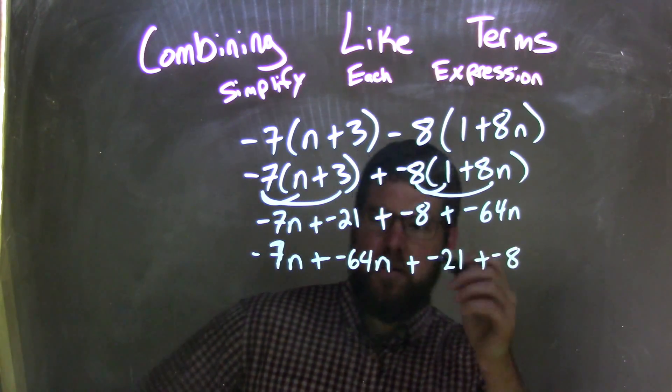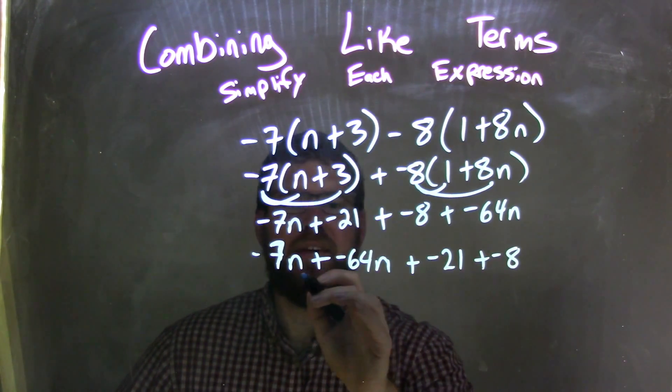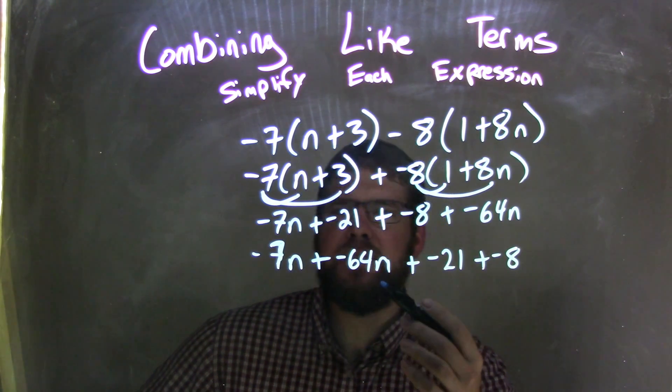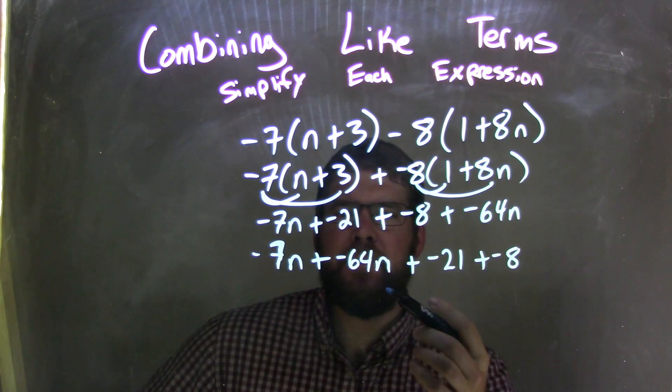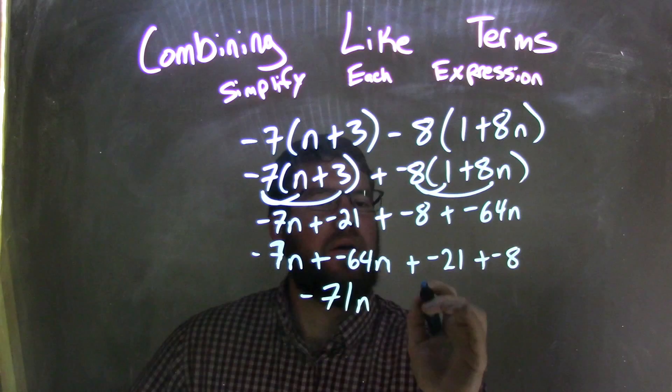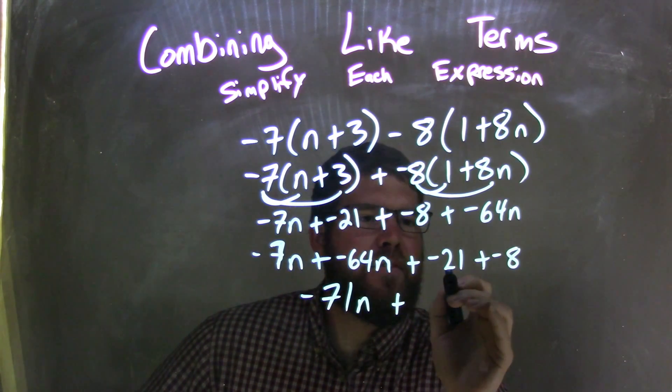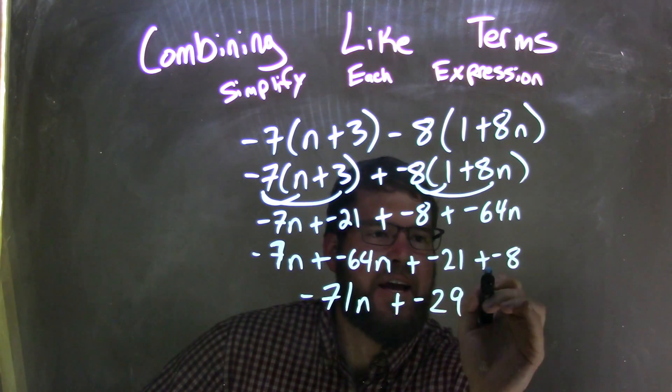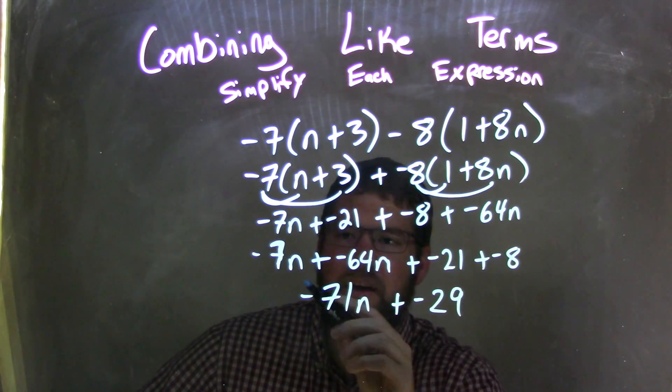Let's combine our like terms. Negative 7n plus negative 64n is negative 71n. Negative 21 plus negative 8 comes out to be negative 29. Two negatives added together is a larger negative, and same thing here.